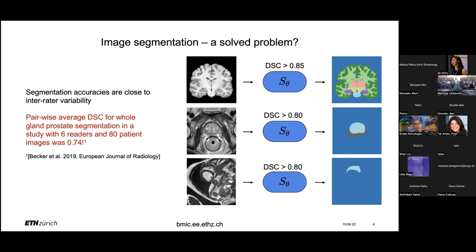It is true that for most anatomical structures you can actually train a really good deep learning model, and the accuracies are very close to inter-rater variability. We wanted to do the test for prostate segmentation with a clinical collaborator. We took six different readers, did 80 images, segmented each six times, and compared them. Prostate segmentation deep learning models produce a dice score of about 0.8, and the inter-rater variability we found was 0.74. So it looks like this problem is solved.